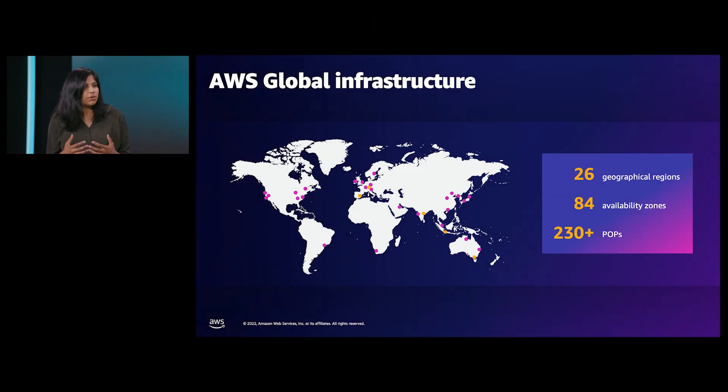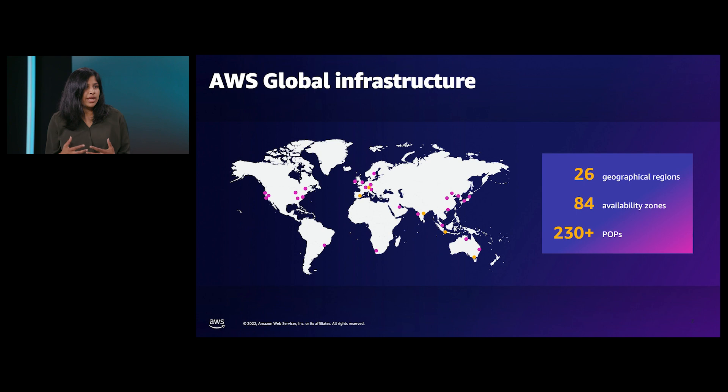Let's unpack that a little bit. When we talk about AWS infrastructure, we think about the global footprint that we have today, which spans 84 availability zones across 26 regions — the largest footprint of any public cloud provider. Local Zones further extend this infrastructure to bring services closer in large metropolitan areas. Tell us more about that — why did we see the need for Local Zones?